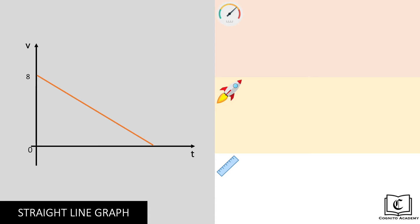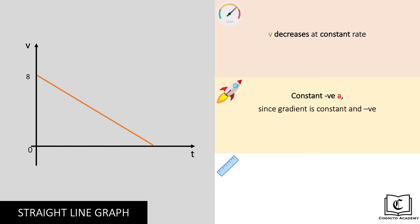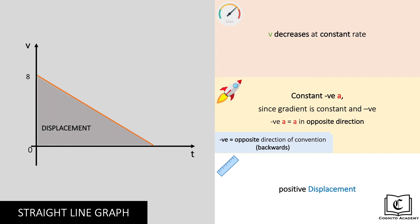Next up, in this graph, this object's velocity is decreasing at a constant rate from 8 meters per second to zero, coming to rest eventually. It is also a straight line graph but pointing downwards, hence gradient is constant but negative, which means acceleration is constant but negative. A negative acceleration means acceleration in the opposite direction — in layman terms, pointing backwards. In summary, negative refers to the direction being opposite, or pointing backwards. Displacement is positive since the area under the graph is positive.